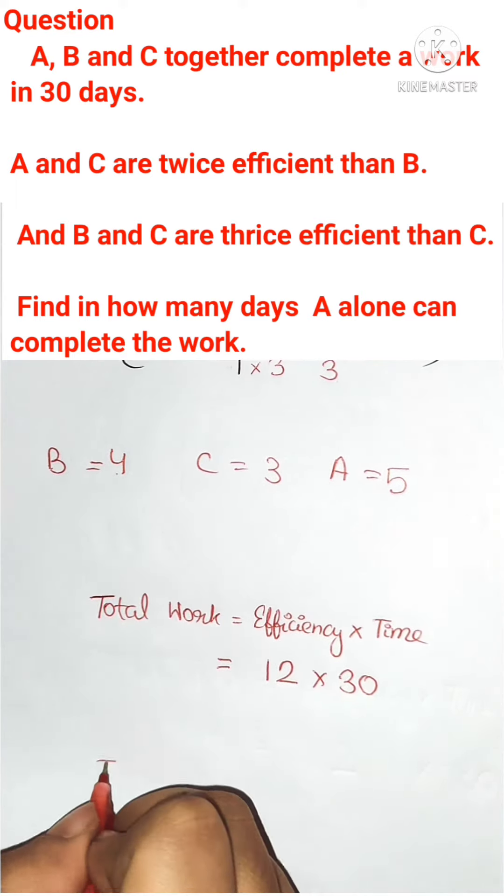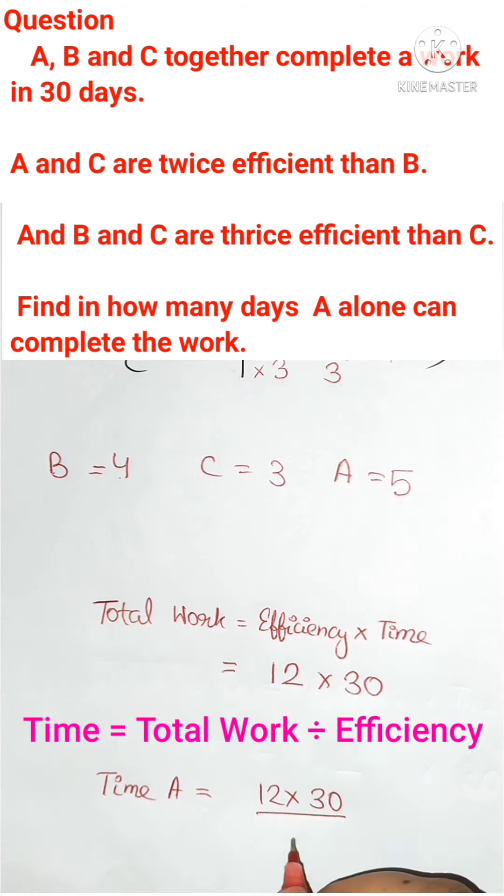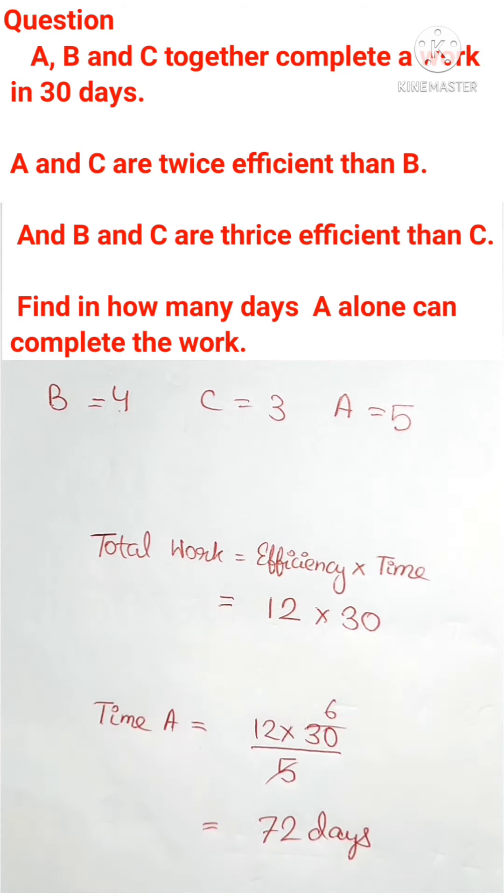We need to find out the time of A. So time of A will be total work done by A. That is 12 into 30. Divided by the efficiency of A that is 5. So our final answer will be 72.